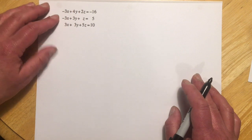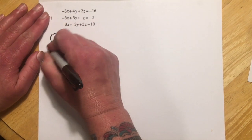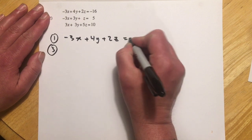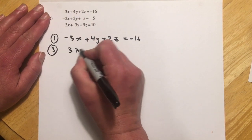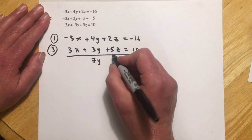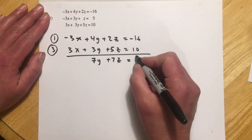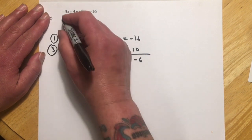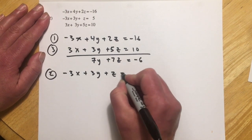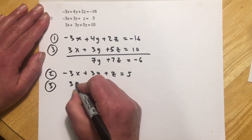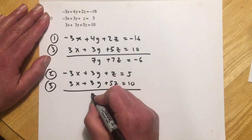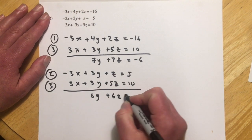So number two, this one's definitely set up for the x's to be easy. So I'm just going to do one and three together, and that'll eliminate an x. And then we'll do three. And x's drop out, and I get 7y plus 7z equals negative 6. And then I'm going to do two and three together. And then adding those, the x's drop out again, and I get 6y plus 6z equals 15.